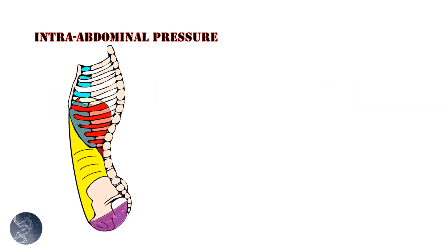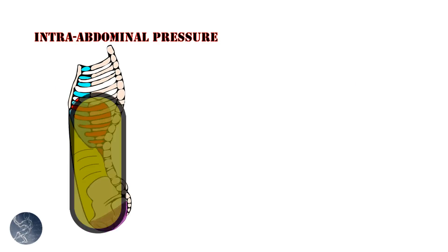The abdominal muscles, pelvic floor muscles, and the diaphragm all work in coordination to regulate intra-abdominal pressure. The image on the left shows how the diaphragm in red, pelvic floor in purple, and abdominals in yellow form a cylinder-like structure.